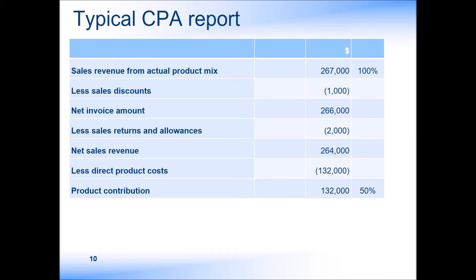In a typical customer profitability report, it is important to look at the product mix, as some products may carry a higher margin. Taking into account the direct product costs is therefore an important part of customer profitability analysis, and wherever possible we want to encourage customers to buy the high-margin items. We start with the revenue from the actual product mix, then deduct any adjustments to the normal selling price such as discounts, then deduct the direct product costs. This gives us the contribution for selling the products.